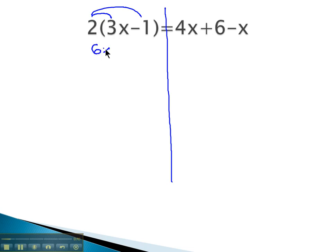2 times 3x is 6x, and 2 times negative 1 is negative 2. On the right side, the simplifying we can do is combining like terms of the 4x and negative x. 4 minus 1 gives us 3x plus 6 remaining.